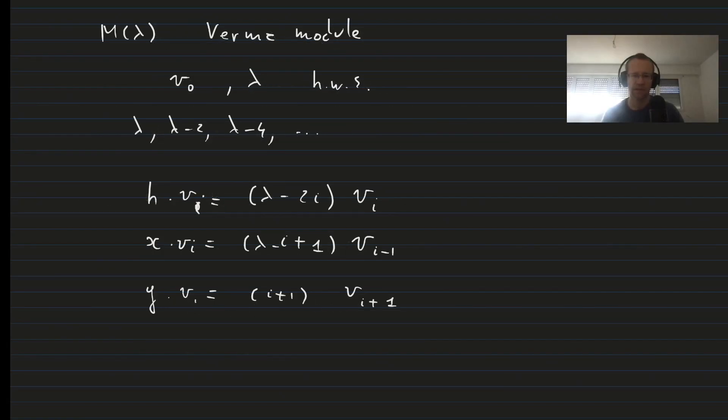And let's analyze how the arrows work on a weight diagram. So if we have here V minus 1, here V0, here V lambda, and here V lambda plus 1, then we can see that we can go up and down on the weight diagram using the operators X and Y.